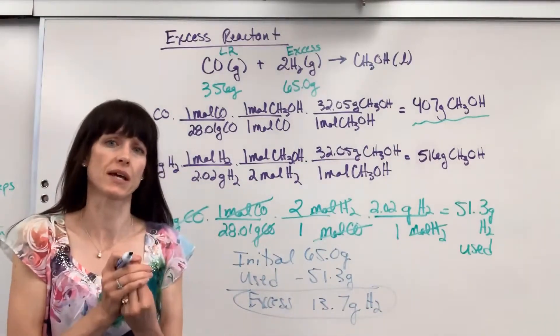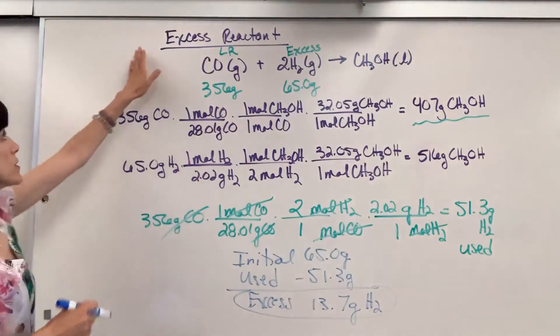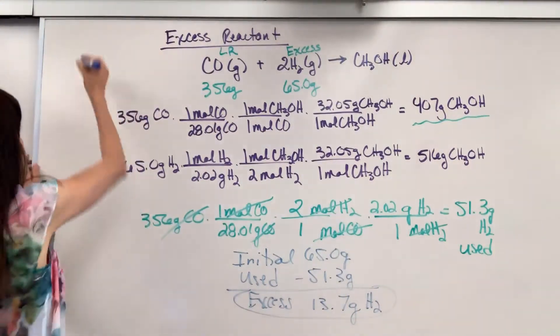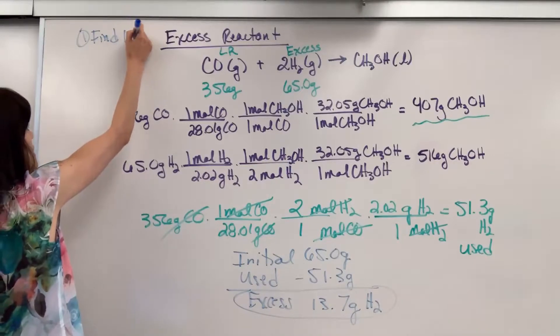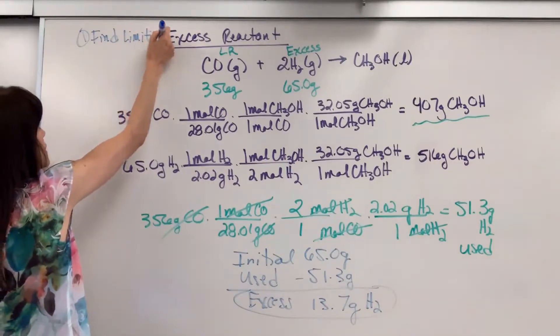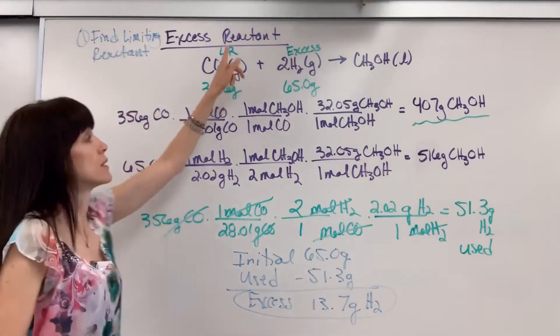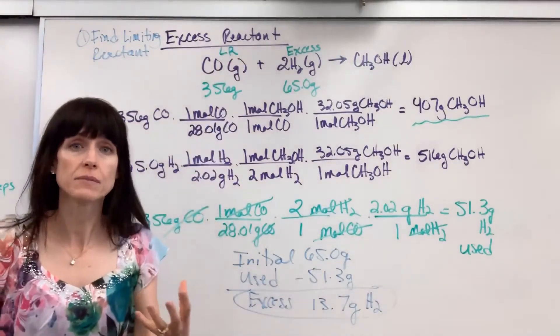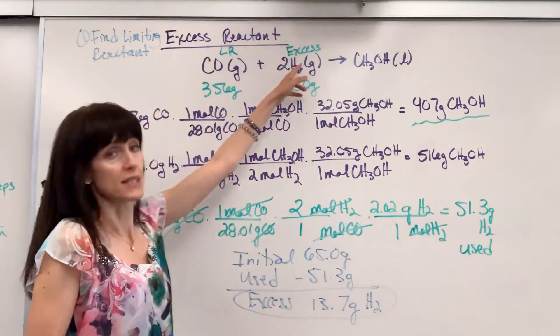Now, I do want to take just a second to write down a recipe list of steps. So when you're trying to find excess reactant, number one, you have to find the limiting reactant. And that's what I labeled as LR. Find the limiting reactant, which means you can then identify the excess reactant.